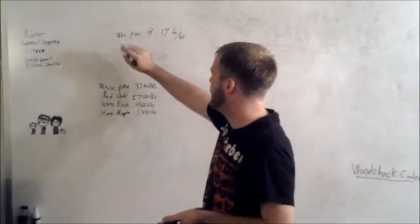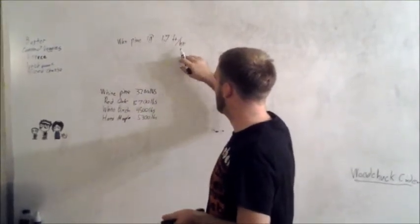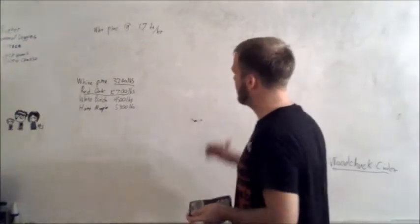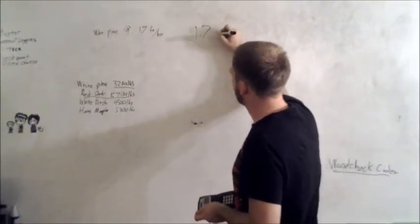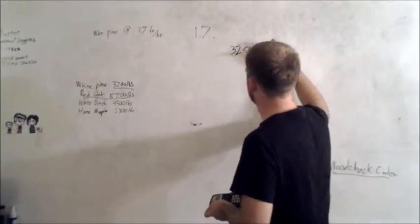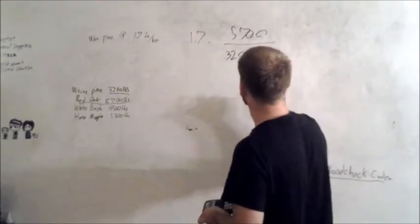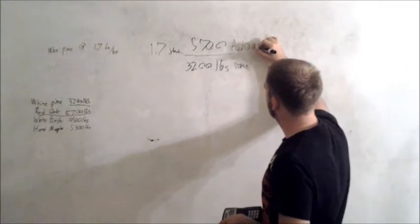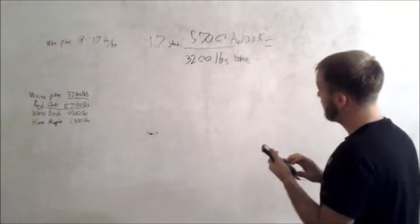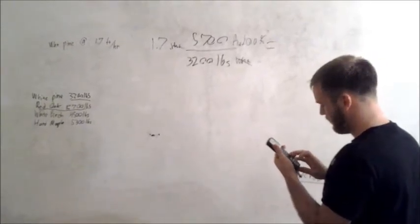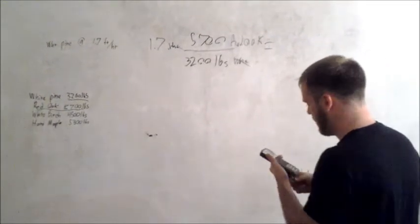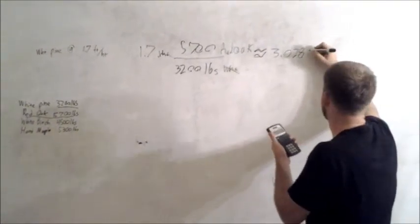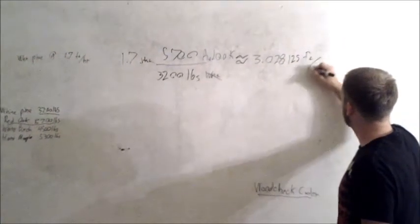So they said that the amount that a woodchuck can do white pine is about 1.7 linear feet per hour. White pine is about 32 pounds. Red oak, which is what I've been asked, is 57 pounds on average which means we need to set up a conversion factor. So times 32 pounds here converted to 57 so that the white pine cancels out and we get our red oak. If we work that out, we get about approximately 0.95 feet per hour.